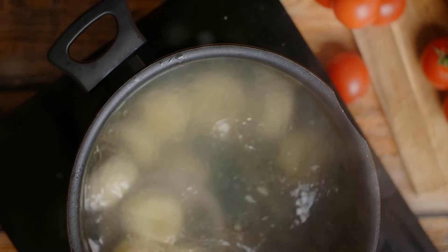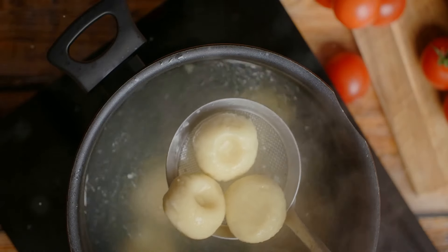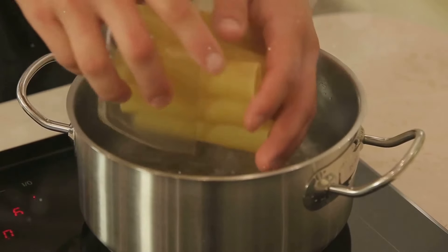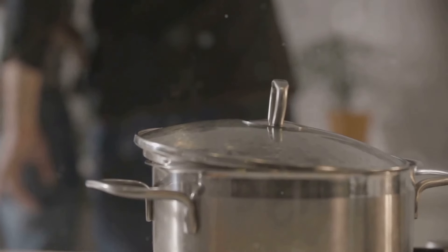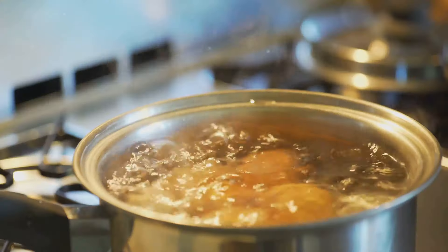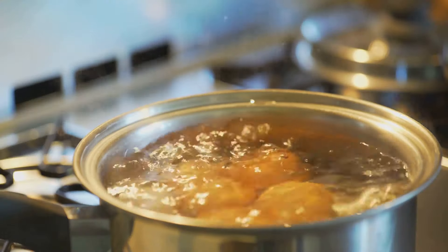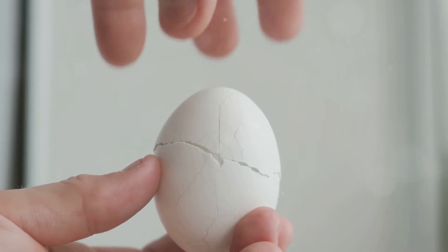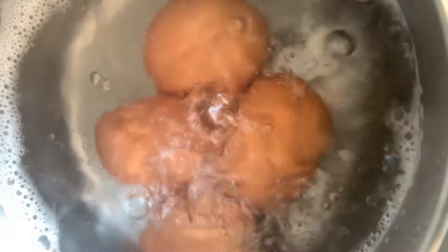Add a pinch of salt to prevent cracking and a splash of vinegar to help with peeling. Bring the water to a rolling boil over medium-high heat. Once boiling, cover the pan with a lid and remove it from heat. Let the eggs sit in the hot water for the following times: soft-boiled 4 to 6 minutes, medium-boiled 7 to 9 minutes, hard-boiled 10 to 12 minutes.